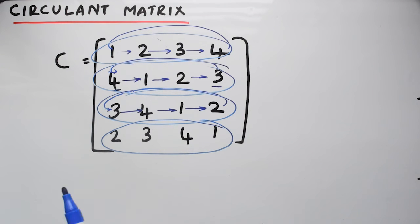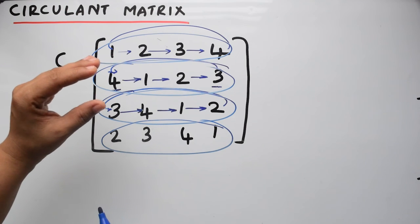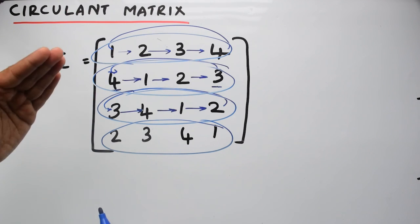So a circulant matrix is a square matrix in which all row vectors are composed of the same set of elements and each row vector is rotated one element to the right relative to the preceding row vector.